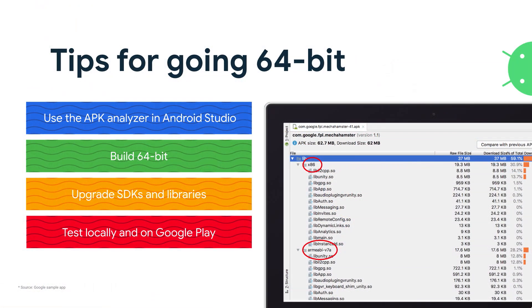How do you actually become 64-bit compliant? We consider it a four-step process. The first is you can start by using APK Analyzer in Android Studio. If you open it to see what 32-bit dependencies you have under the libraries for x86 and ARM ABI v7a, you can see your 32-bit dependencies. You can next do a 64-bit build. The major game engines all support it now. CMake, NDK build, and Gradle — you can all target 64-bit.